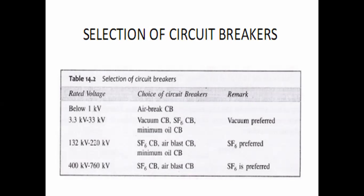Similarly, if the working voltage is about 132 kV to 220 kV, in that case we use an SF6 circuit breaker, air blast circuit breaker, or minimum oil circuit breaker (MOCB), but preferably we use the SF6 circuit breaker. From the examination point of view or for your competitive exams, the question comes: up to a certain voltage level, which type of circuit breaker can be preferred or used? For example, if a question asks which circuit breaker to use for 132 kV to 220 kV with options of MOCB, air blast, vacuum, and SF6, the correct answer is SF6 circuit breaker.